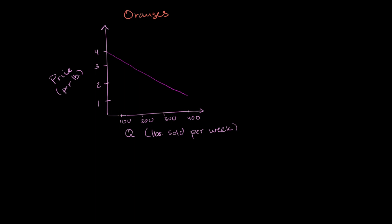The first 100 pounds of oranges, or that very 100th pound, someone would be willing to pay $3 per pound. But then the 100th and first pound would be a little bit less than that.